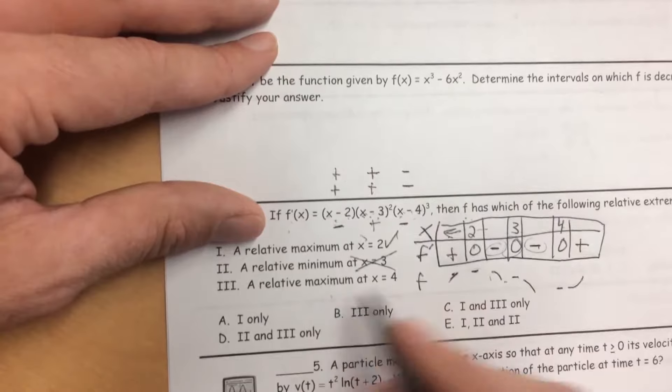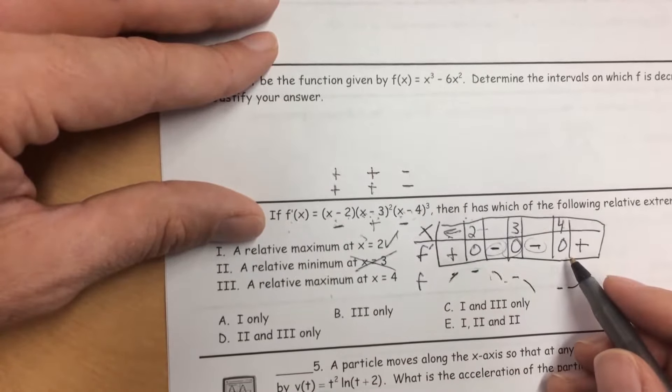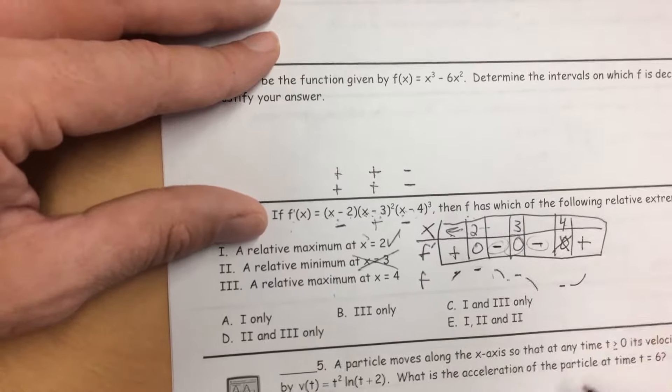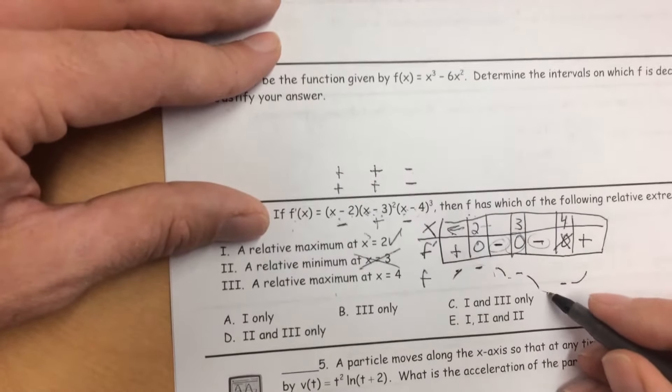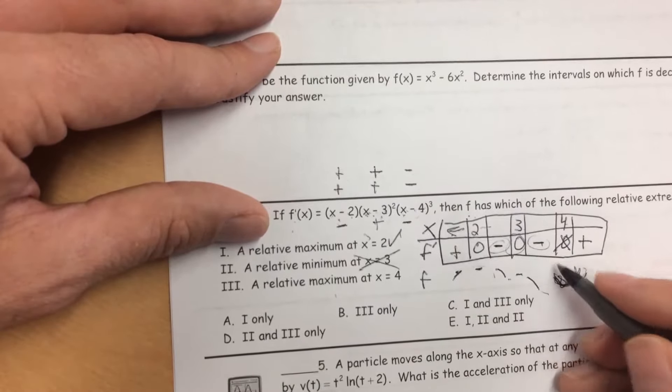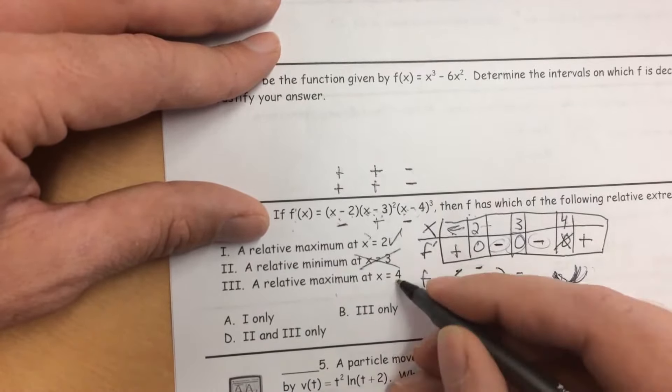f has a relative maximum at x equals 4. That is not correct either. Even though the derivative is 0, f' changes from negative to positive. So that would create a relative minimum value. f changes from decreasing to increasing. So that's not right. So it was 1 only.